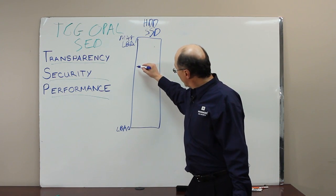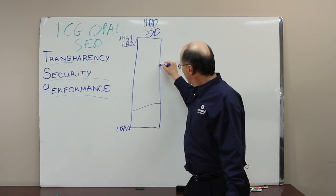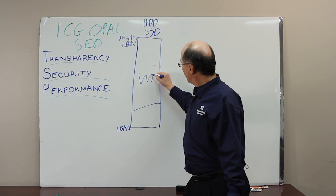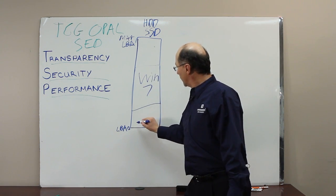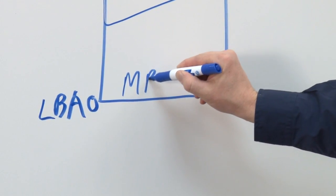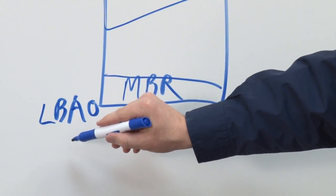And on this drive, somewhere on this drive, is Windows 7. I'm going to do Windows 7 in my example today. And there's a master boot record down at LBA 0.